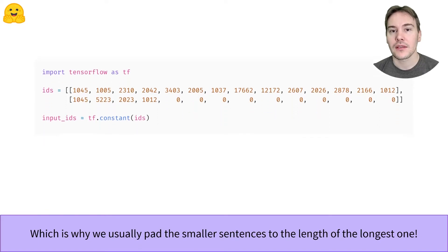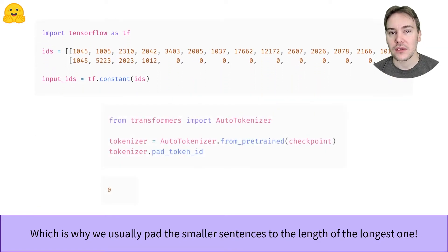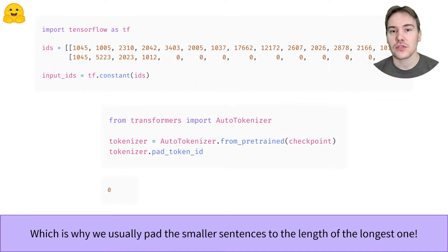The value used to pad the second sentence should not be picked randomly. The model has been pre-trained with a certain padding ID, which you can find in tokenizer.padTokenID.